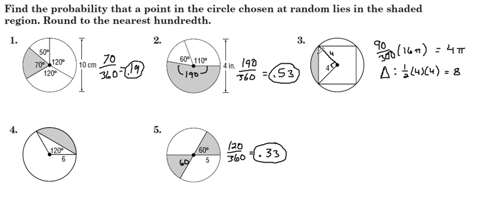All right, what's left is to get this shaded region, 4 pi minus the 8. Now, we're going to divide that quantity by the entire circle, 16 pi, because we want a ratio, we want the probability of choosing a point in the shaded region. This comes out to .09.